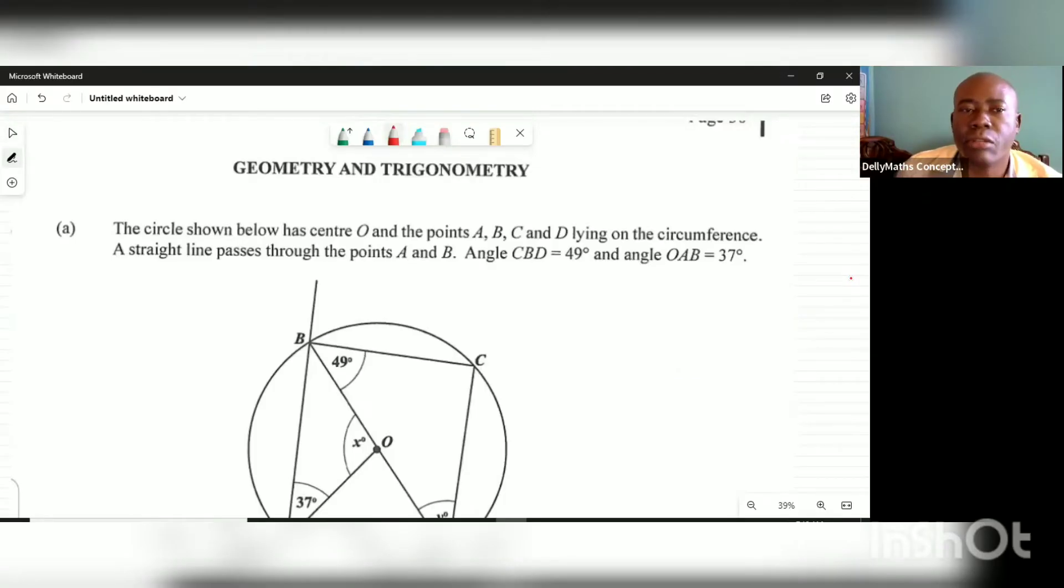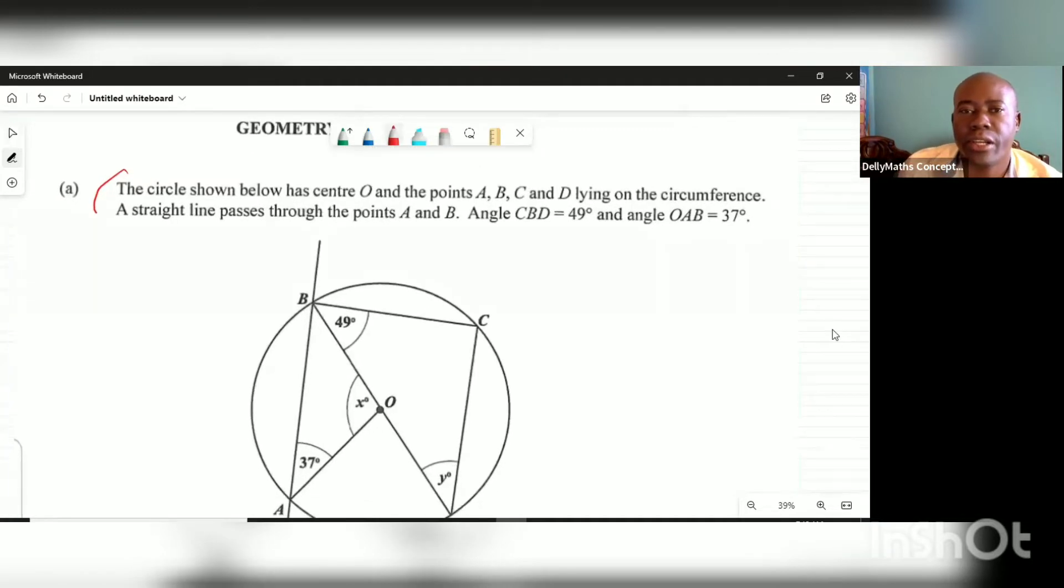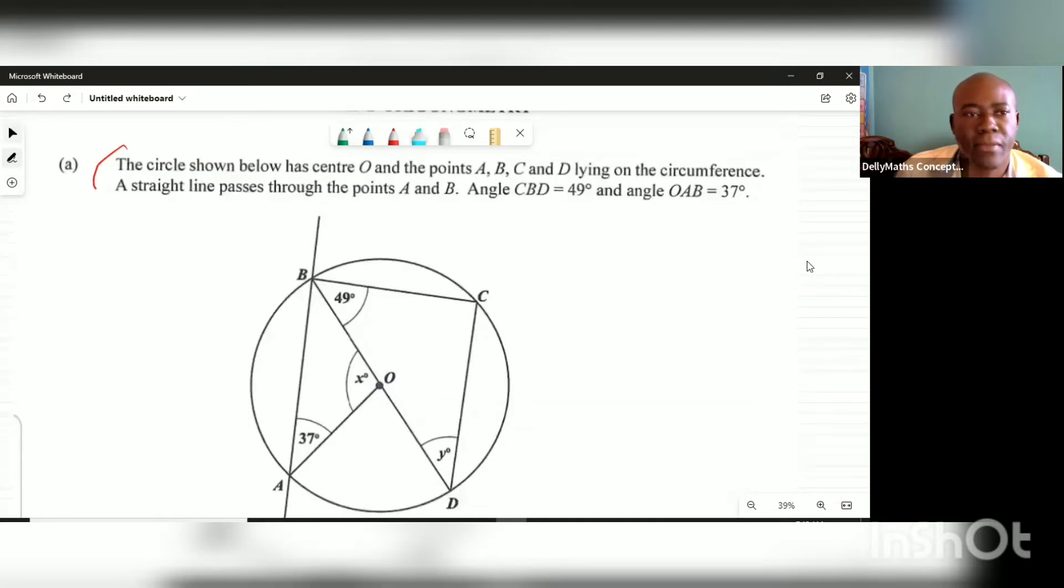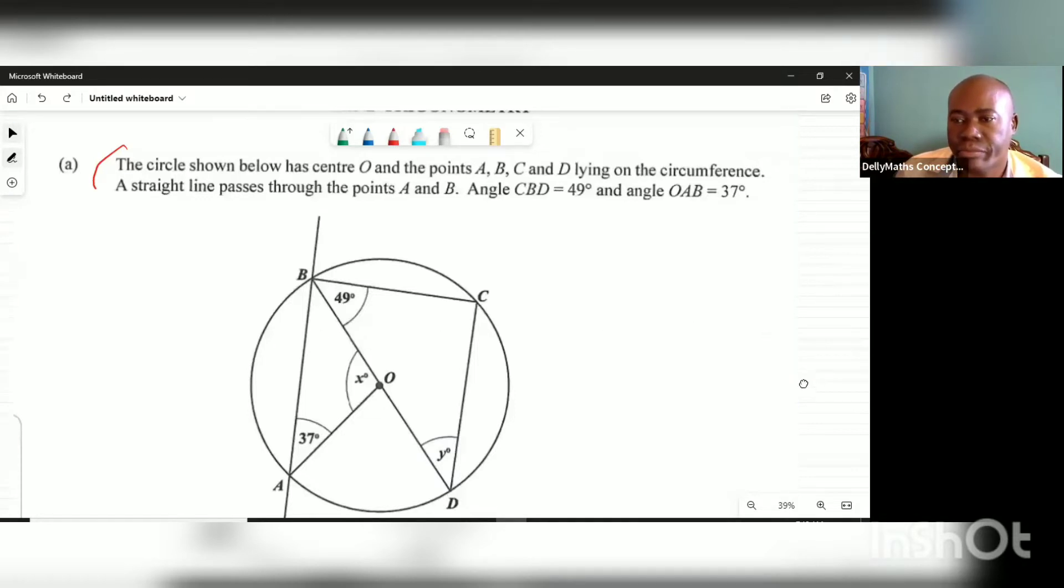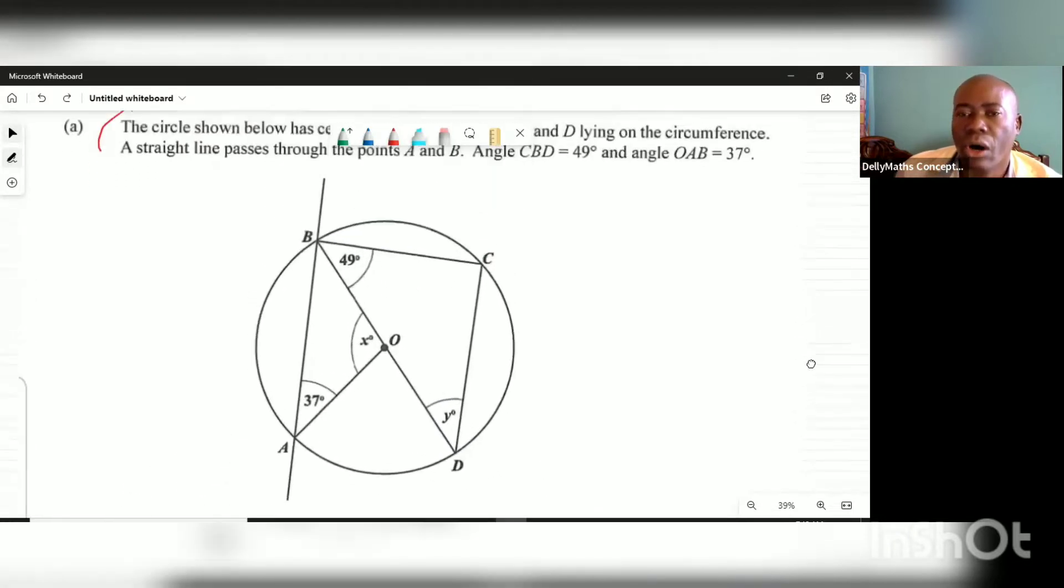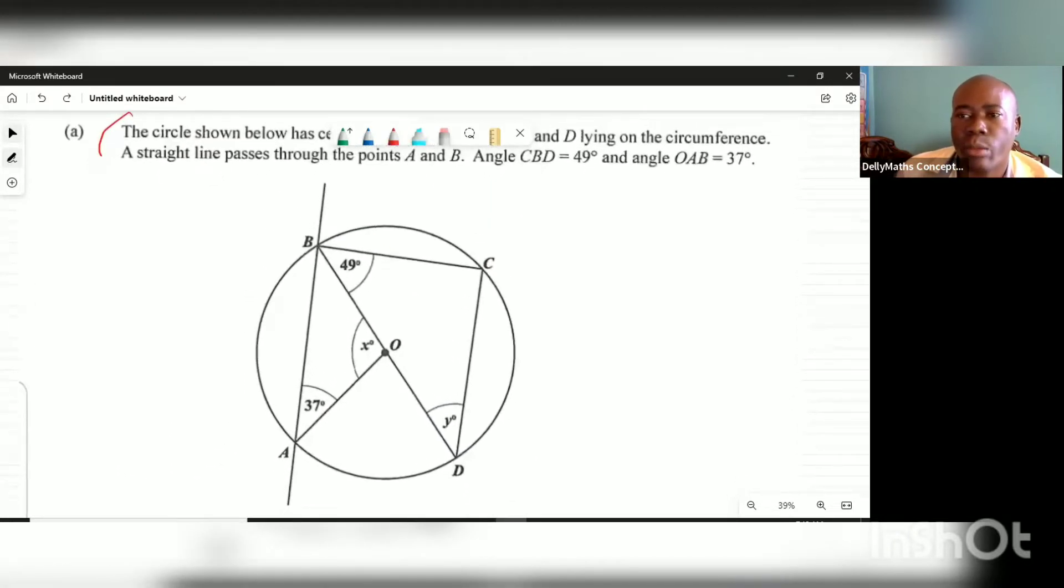So it says the circle below has center O. Let me move the circle up so you can see. The circle below has center O right there, and the points A, B, C, and D lie on its circumference. A straight line passes through the points A and B. Angle CBD is 49 degrees, and angle OAB is 37 degrees. All that information is already on the diagram.